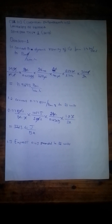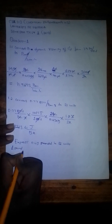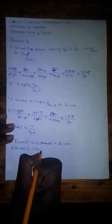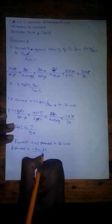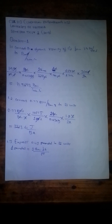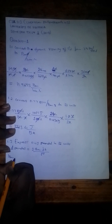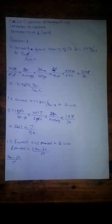Question 1.3 says express 0.43 poundal in SI units. First, note that 1 poundal equals 1 pound mass feet per second squared. So we rewrite 0.43 poundal as 0.43 pound mass feet per second squared, and we need to express this in SI units.